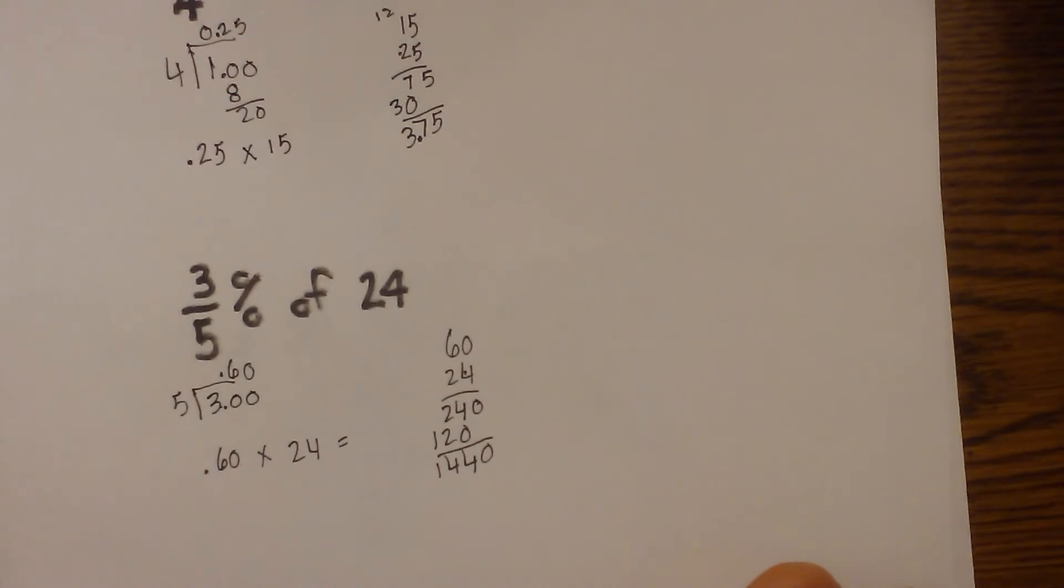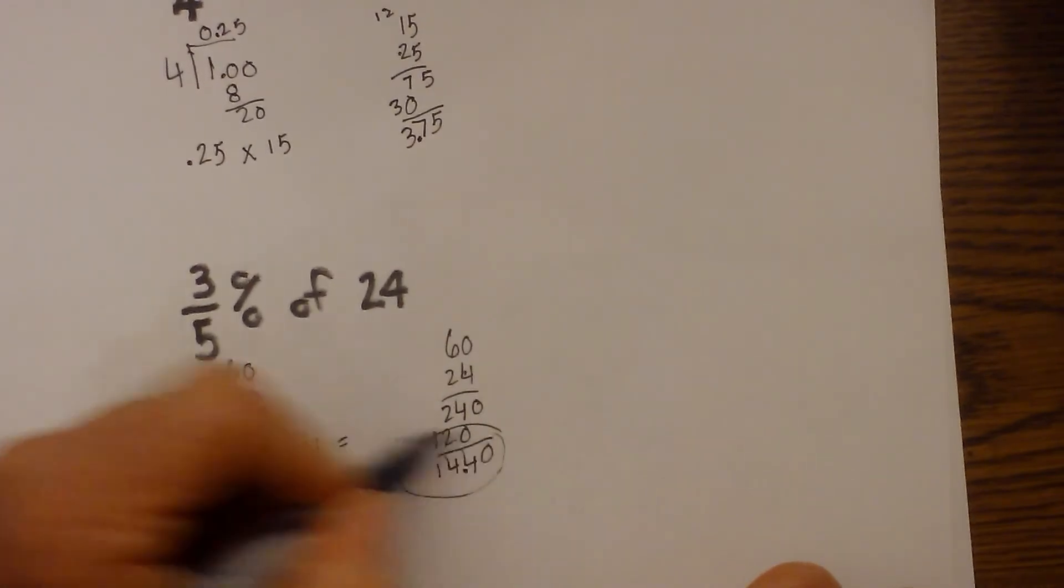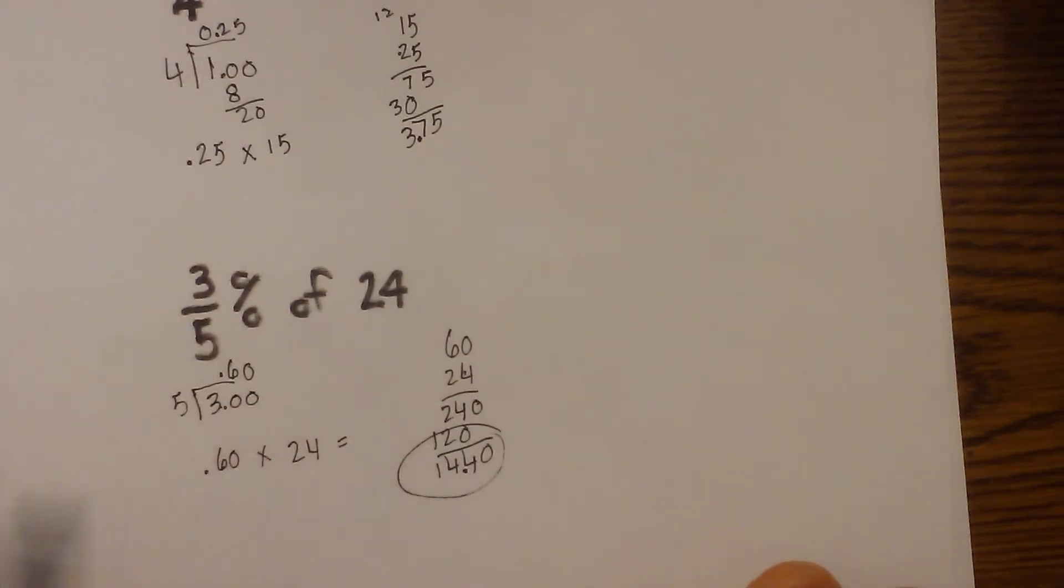So now we have 1,440, but I need the decimal two places to the right. So I get 14.4. So 3 fifths percent of 24 is 14.4.